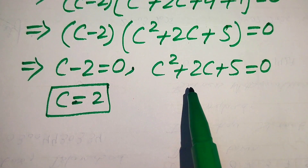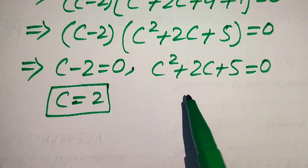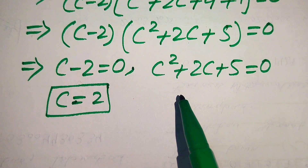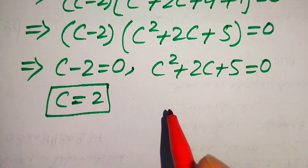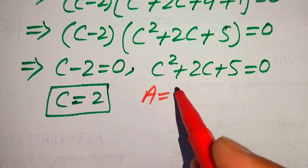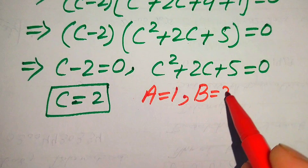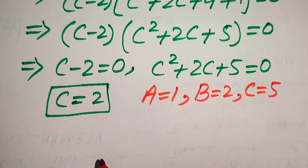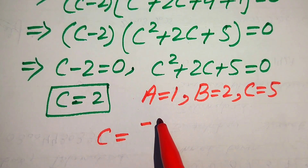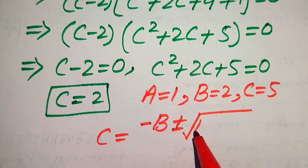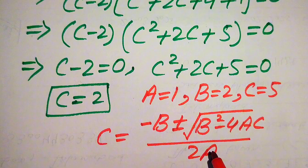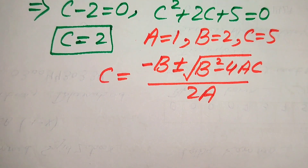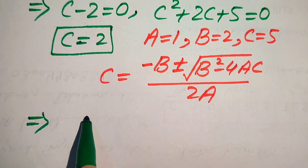There are three methods to solve a quadratic equation: factorization, completing the square, and the quadratic formula. Here we use the quadratic formula. The coefficients are a equals 1, b equals 2, and c equals 5. The quadratic formula is c equals minus b plus or minus square root of (b squared minus 4ac) divided by 2a.